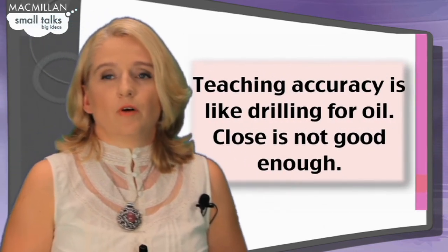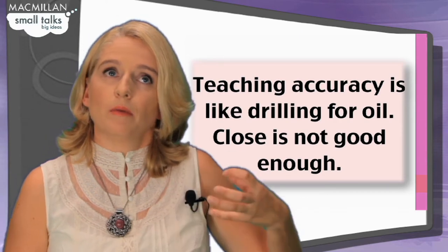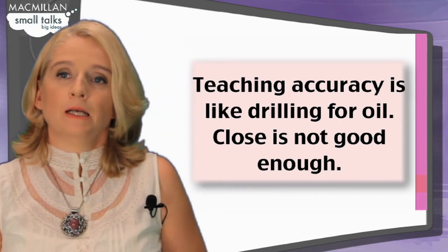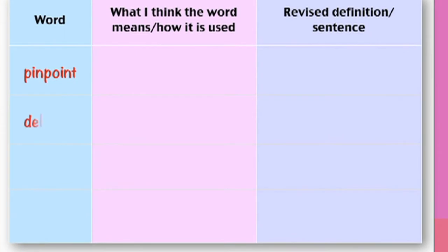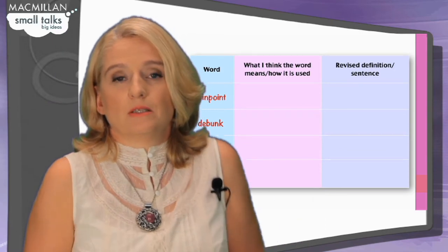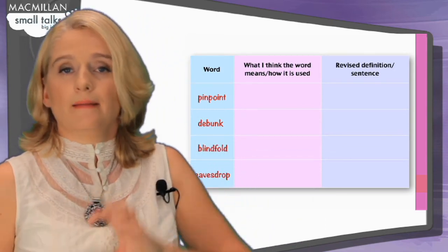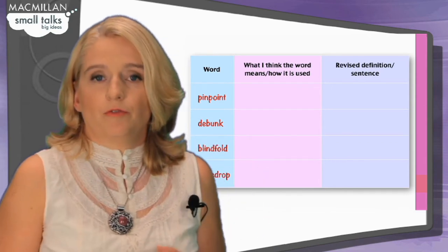Teaching accuracy is like drilling for oil — close is not good enough. You have to concentrate more on how accurately students can use a particular phrase. I often give learners a chart and ask them to choose four or five words from the list they've studied, write the words in, give the definition, and explain how they think the word is used. Very often they assume they know — sometimes they don't — and then we open the books and dictionaries to see how these words are actually used correctly.